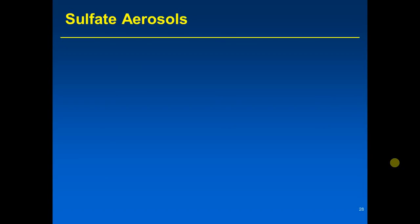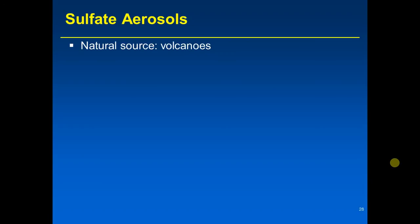We will be discussing both natural and anthropogenic sources of aerosols. Let's start with a natural source of sulfate aerosols: volcanoes. If a volcano erupts, it can put sulfate aerosols into the atmosphere. Remember, there are three types of smoke aerosols: sulfate, organic carbon, and black carbon.